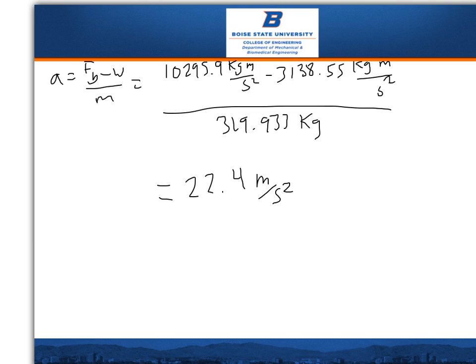So you have the 10,295.9 kilogram meters per second squared minus 3,138.55 kilogram meters per second squared. Divide that by 319.933 kilograms,